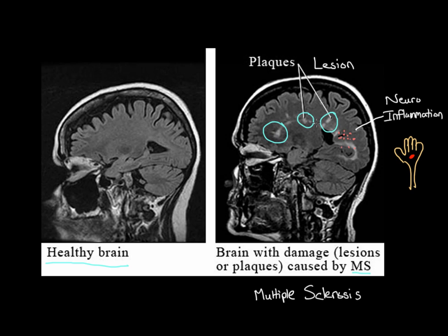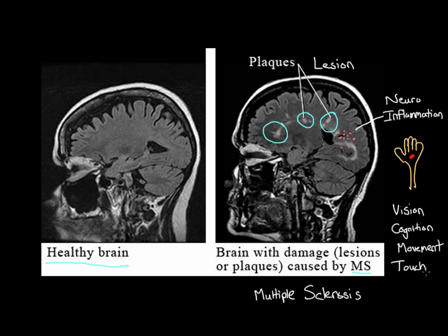Notice how these lesions form in different parts of the brain. Different parts of the brain are responsible for different functions — some for vision, others for cognition, movement, touch, and so on. Depending on where the lesions form in the brain, you can get a variety of different symptoms that can affect all of these functions.